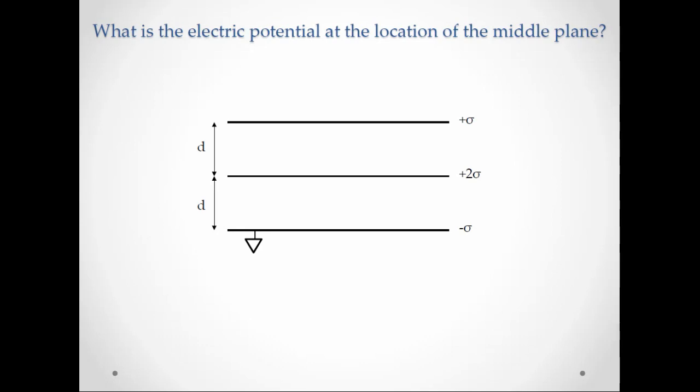And you'll notice the little triangle symbol at the bottom. That is a ground symbol, which means the bottom plate is at potential zero. And I ask, what is the electric potential at the location of the middle plane?